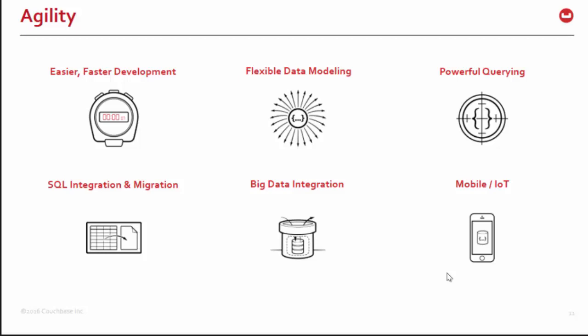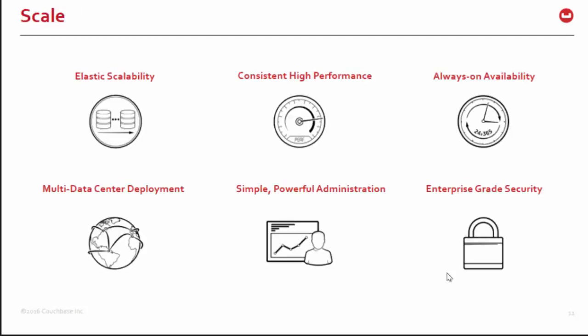Couchbase has integrations with big data tools like Hadoop and Spark. On scalability: with a traditional relational database, the easiest way to scale is to buy a bigger, beefier machine — more processors, more RAM — which can get very expensive. The Couchbase approach is to just add additional commodity machines into a cluster and scale out as you need to. So if it's a busy time of year — say Christmas season or registration at the college — you could add more machines to handle that load, then drop those machines off when things cool down. Very elastic, very flexible scaling.